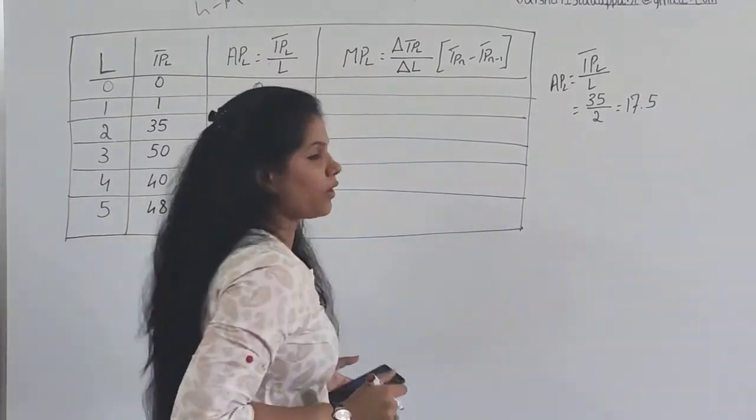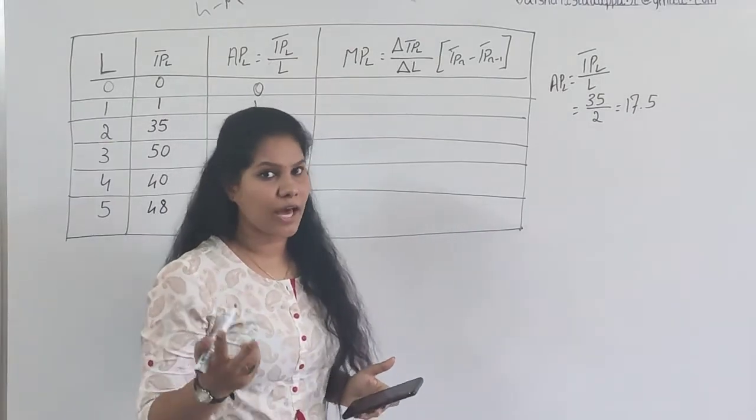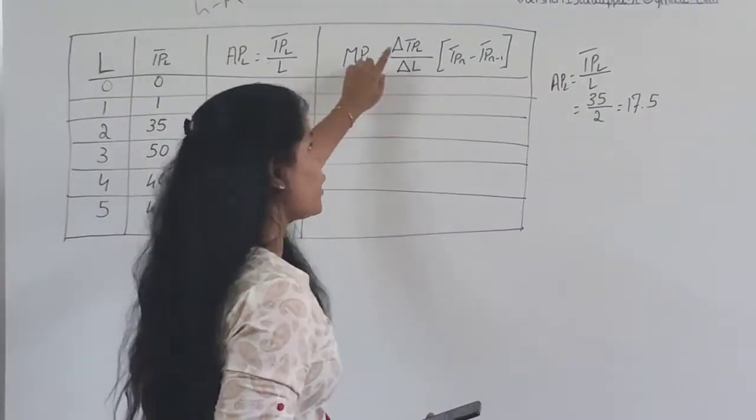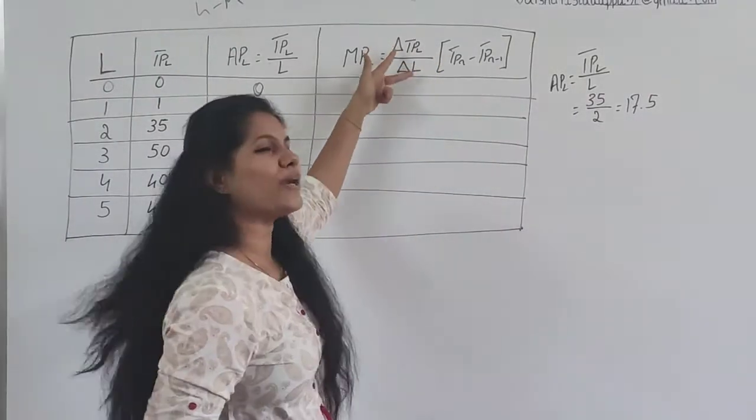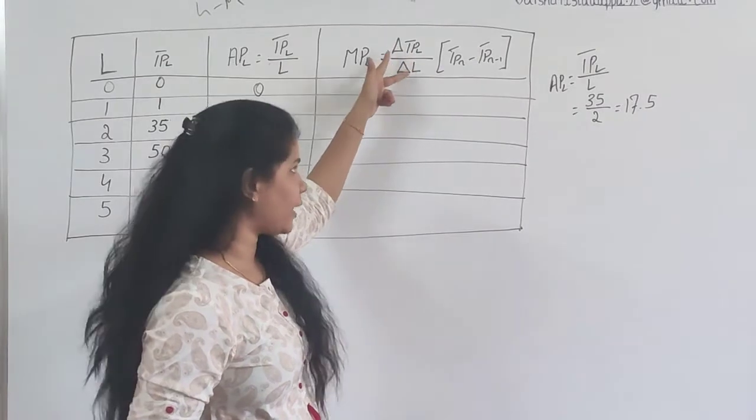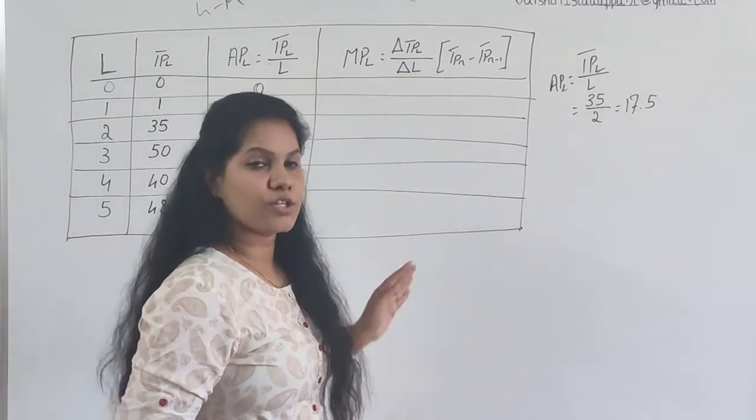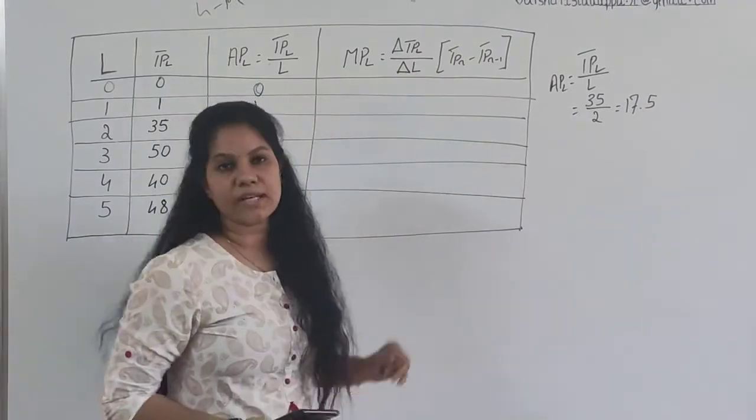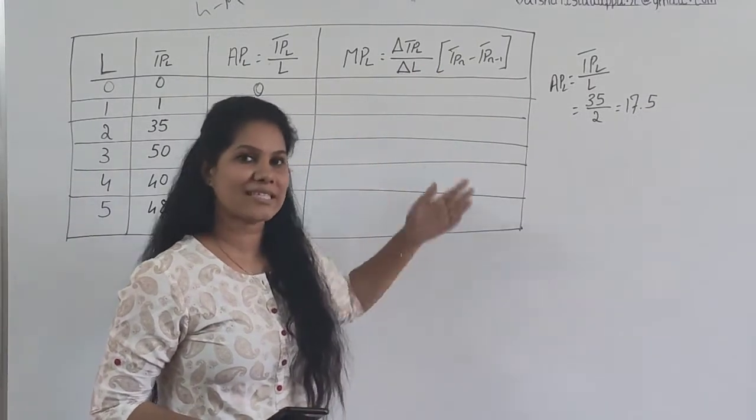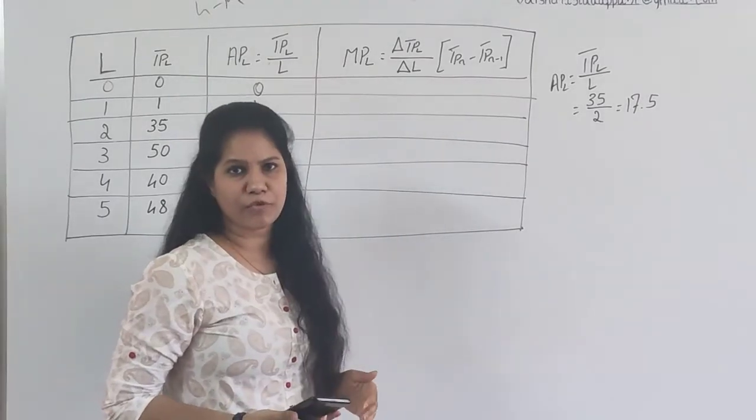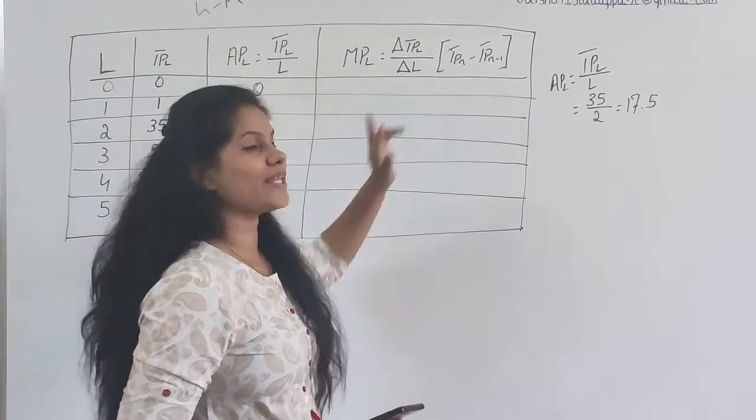Now it's time to find out marginal product. To find out marginal product, you have two different formulas. One formula is change in TPL divided by change in L. This is a very lengthy process. I'll help you with that also, but at the same time this is the easiest one. I'll tell you both. The best thing is I've already given this answer in my previous two classes, so please do check. I'll go with the easy method.